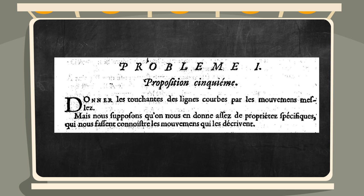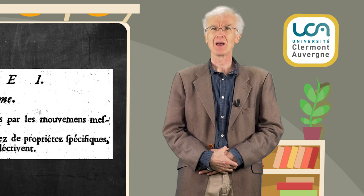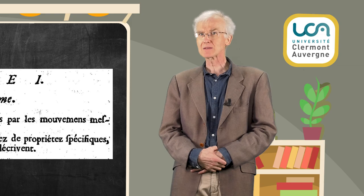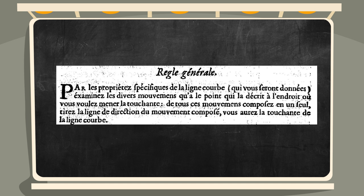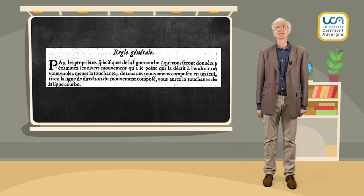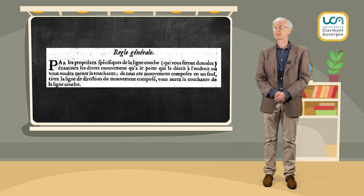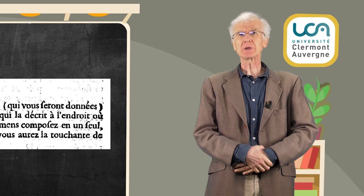Dans ses écrits, Roberval pose la question de donner les touchantes des lignes courbes. Par touchantes, il faut comprendre tangentes, car Roberval utilise la terminologie touchante plutôt que la terminologie tangente. Roberval propose une méthode de construction de tangentes à diverses courbes complexes, dont la cycloïde. La règle générale projetée ici au tableau et énoncée par Roberval consiste à interpréter systématiquement une courbe comme un objet cinématique, régie par plusieurs mouvements composés, dont la tangente en un point apparaît comme la résultante de ces différents mouvements composés. Cette règle générale par les mouvements mêlés, selon la terminologie de Roberval, peut sembler un peu obscure.